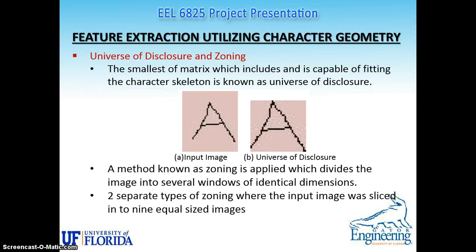We have to define two terms here: universe of disclosure and zoning. The smallest metric which includes and is capable of fitting the scatter skeleton is known as the universe of disclosure. In the picture, part A shows the input image and after the universe of disclosure we show part B which is fitted in a proper scale. The method of zoning is applied which divides the image into several windows of identical dimensions. For this project we have several types of zoning where the input image was sliced into nine equal-sized images.